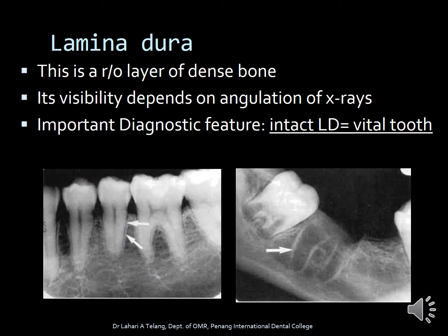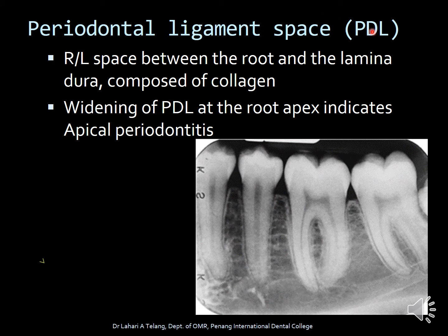Next, we move on to lamina dura. Lamina dura is an important radiographic entity — it is a radiopaque layer of dense bone whose visibility depends on the angulation of x-rays. An intact lamina dura indicates the tooth is vital. The white arrow marks here show the white line around the tooth which is the lamina dura. This case shows the socket left after extraction — a fresh socket — with an intact lamina dura. Eventually, as bone remodels in an edentulous area, the lamina dura will cease to exist and merge with normal bone. The PDL, or periodontal ligament, is the radiolucent space seen between the root and the lamina dura, composed of collagen and soft tissue — which is why it's radiolucent.